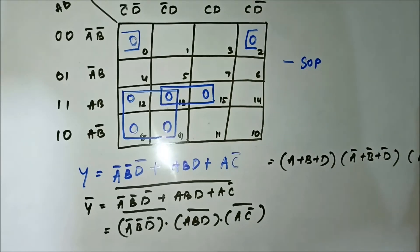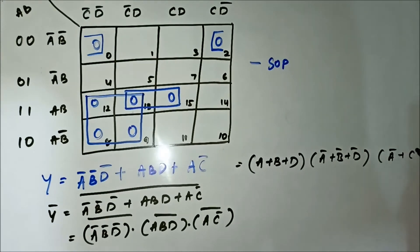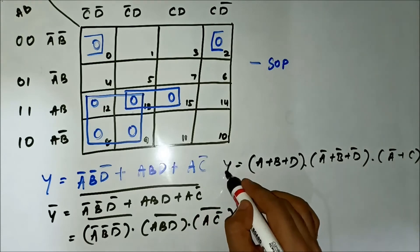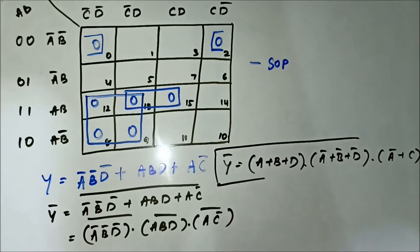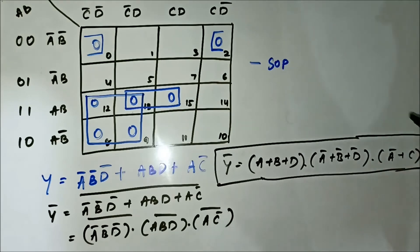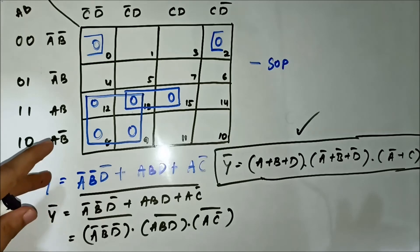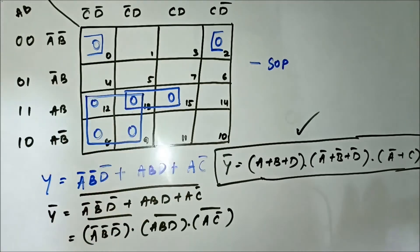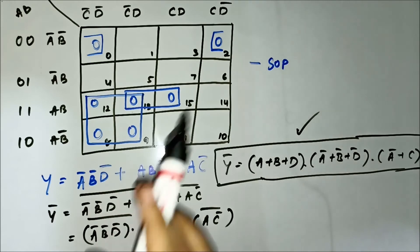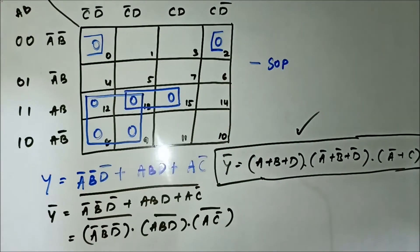The required POS simplified expression is: (A + B + D) · (A-bar + B-bar + D-bar) · (A-bar + C). This step of taking the complement of the obtained SOP expression is very important. This completes the first question related to 4-variable KMAP for POS expression using SOP KMAP.